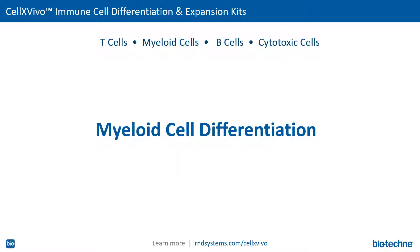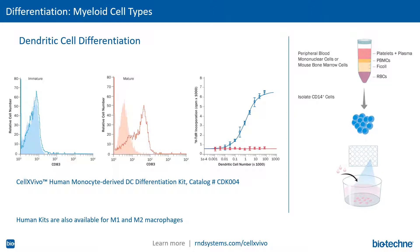We also offer several kits for the differentiation of myeloid cell types. First, our human and mouse dendritic cell differentiation kits utilize immature CD14-positive monocytes as a starting cell population. Both kits contain base media, buffers, cytokines, and optimized protocols to drive these cells toward a dendritic cell fate.